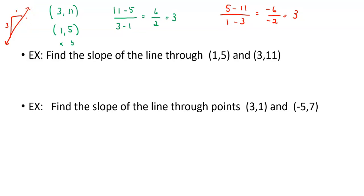All right. Here's the two other ordered pairs, (3, 1) and (-5, 7). We want to find the slope between those two points. So maybe we'll do the same thing. Maybe we'll line them up underneath each other.